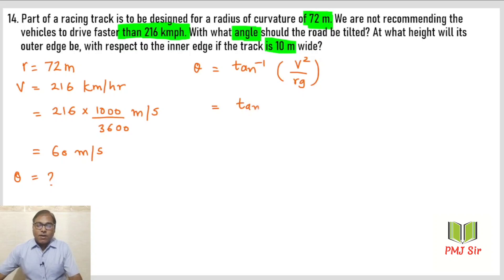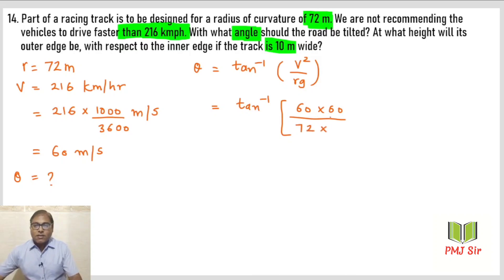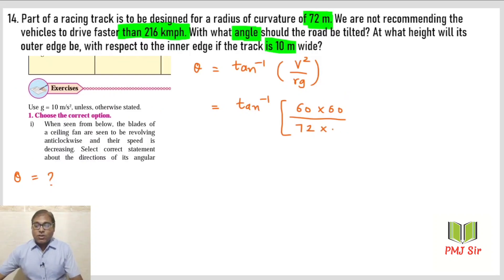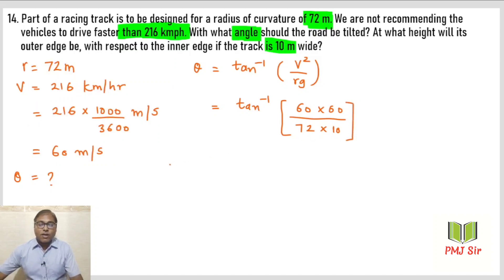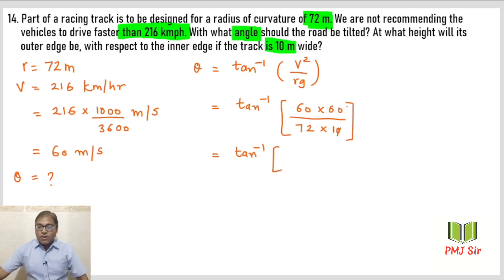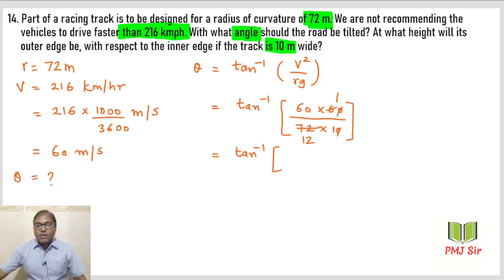Values daalte hain: theta = tan inverse of (60 × 60) divided by (72 × 10). Yahan g ka value exercise mein 10 diya hua hai. Simplify karte hain: upar 3600, neeche 720. Zeros cancel hone ke baad 60/12 = 5. Toh theta = tan inverse of 5.